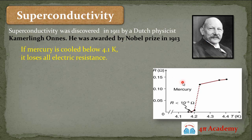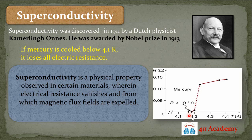He was doing some experiments on Mercury. During this experiment, he reduced the temperature of Mercury, and he observed that when the temperature of Mercury reaches nearly 4.1 Kelvin, its electric resistance drops down to nearly zero. You can see here in this graph — this is a graph between electric resistance and temperature for Mercury. Up to nearly 4.2 or 4.3 Kelvin, the electric resistance of the substance is greater than 0.10.